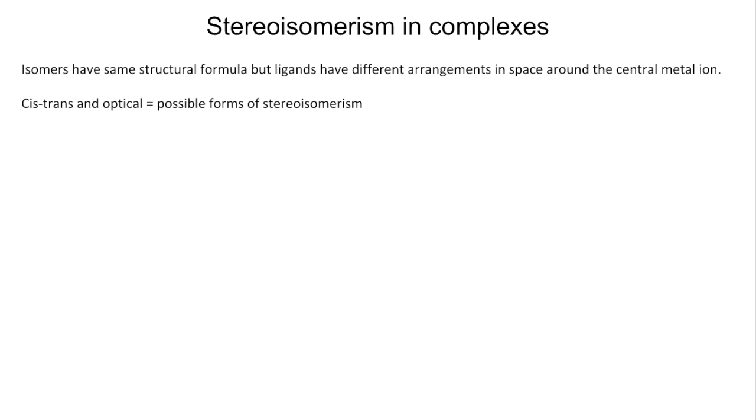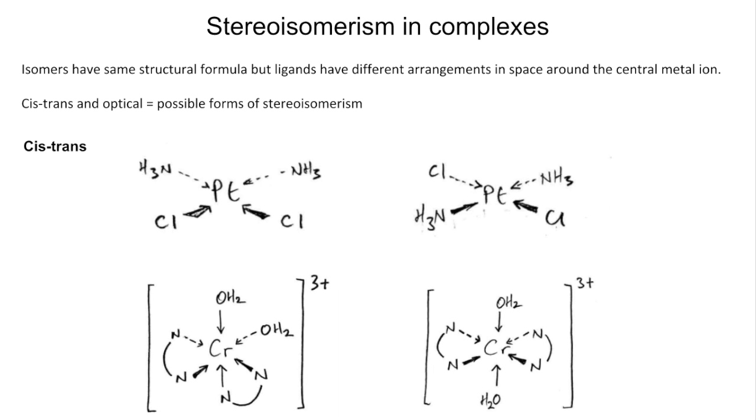We're going to move on to stereoisomerism now that we can get in complexes. Just a reminder that stereoisomers have the same structural formula, but the ligands have got different arrangements in space around that central metal ion. Now the type of stereoisomerism that we can see in complexes can be cis-trans and optical. So we'll start with cis-trans. There's a pair of square planar isomers—one is cis, one is trans—and there's a pair of octahedral complexes. And again, one is cis, one is trans. We need to work out which one's which.